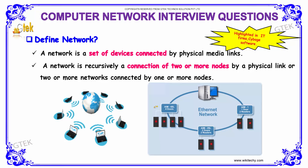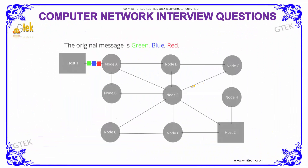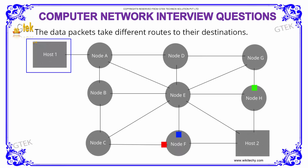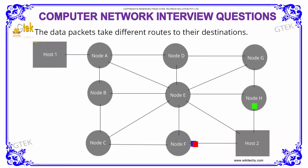So a network can be a network of networks — small networks are connected to form a big network. If you see over here, we have a network which has a host 1 and a host 2. Host 1 will be your source and host 2 is the destination, and we have nodes ranging from A to H.